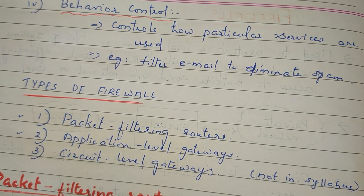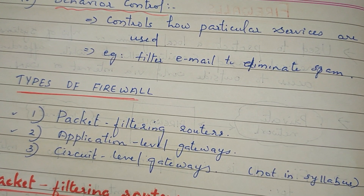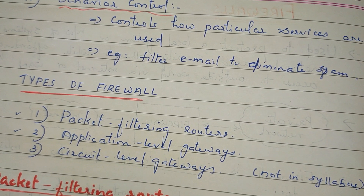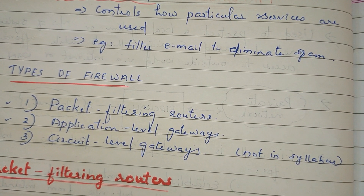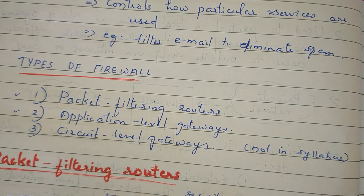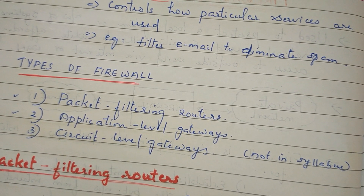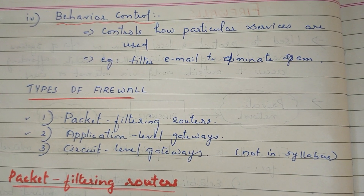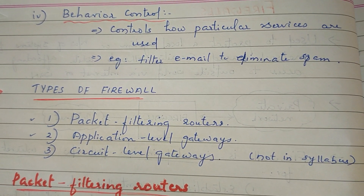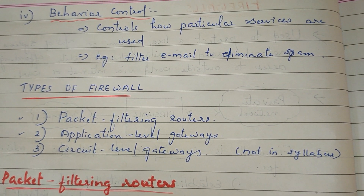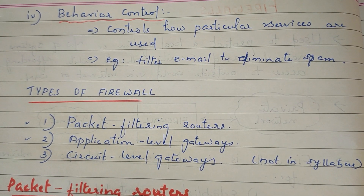There are three types of firewalls: Packet Filtering Router, then Application Level Gateway, and Circuit Level Gateway. The third one is the Circuit Level Gateway in the syllabus. So we need to explain the Packet Filtering Router and the Application Level Gateway. We will explain these two types in the next two videos.